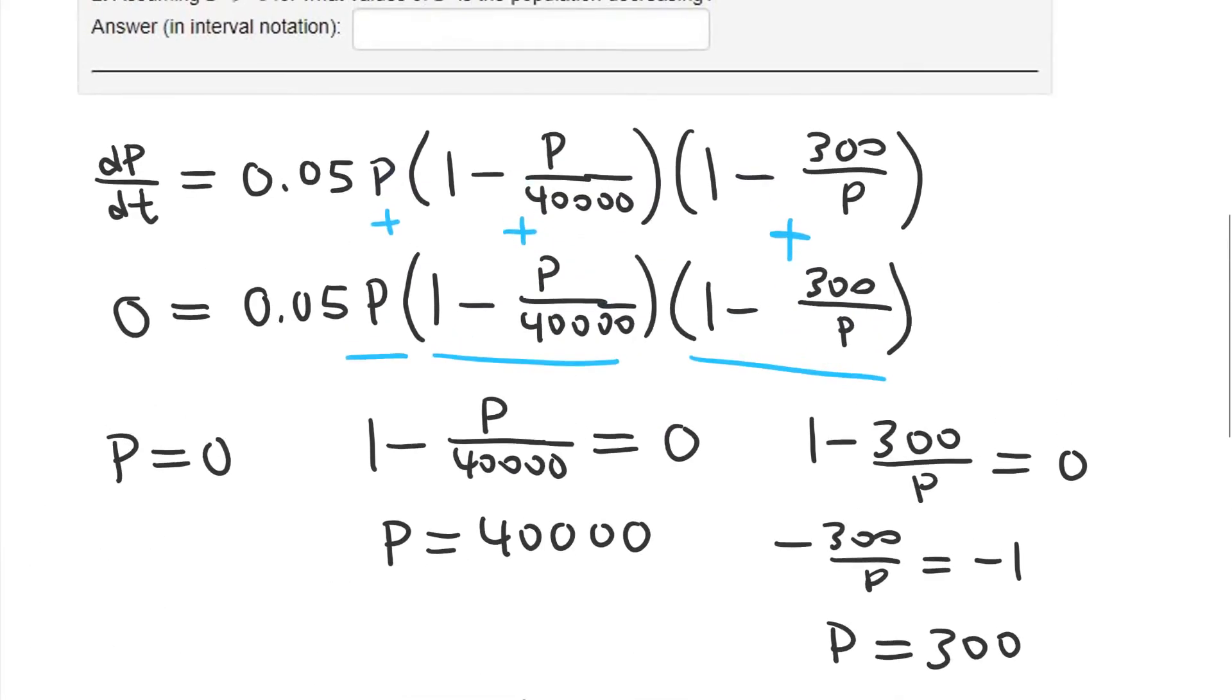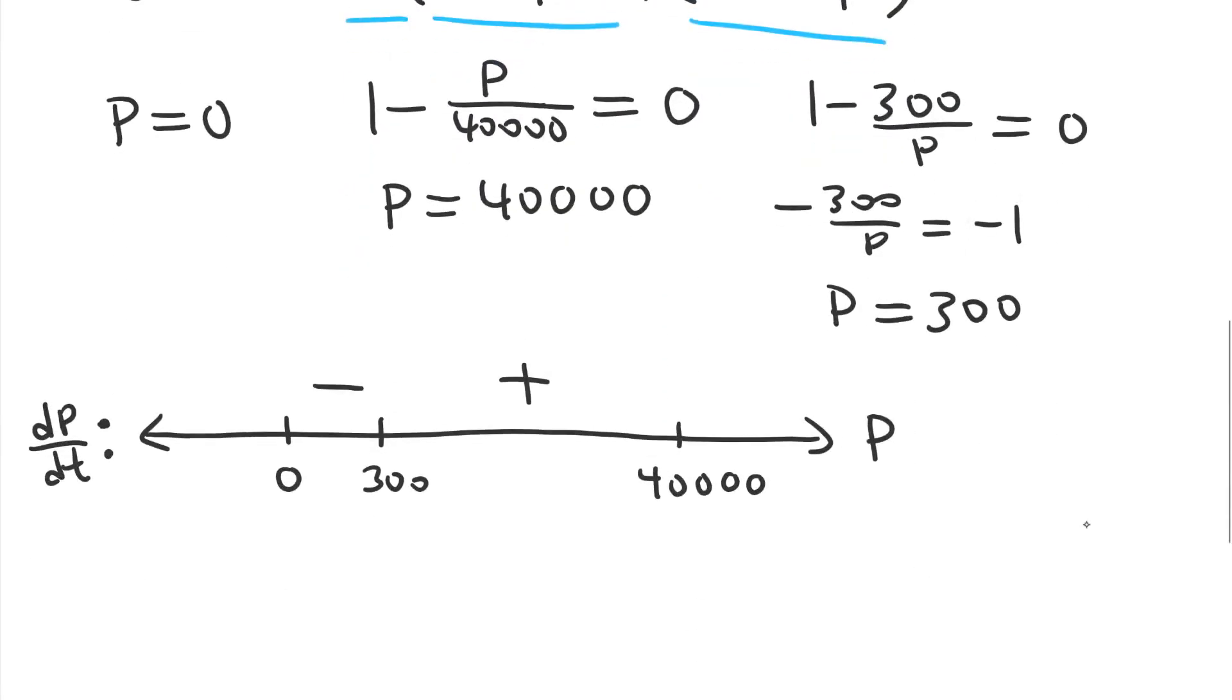And finally, when P is greater than 40,000, this one will remain positive. But this one, you can see, if P is greater than 40,000, the whole fraction will be greater than 1. And so, 1 minus a number greater than 1 gives me a negative number. And so it's going to be negative in this interval. And since population must be positive, I'm not really worrying about that other interval here where P is less than 0.